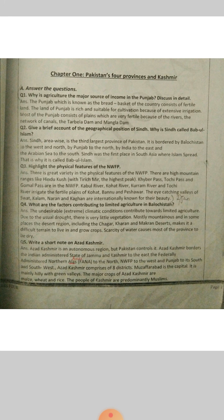The undesirable extreme climatic conditions contribute towards limited agriculture in Balochistan. The climate is very undesirable. Balochistan is divided into two types of areas: desert and mountains. In some places there are desert regions including the Chagai, Kharan, and Makran deserts. These deserts and mountainous areas make it a difficult terrain to live in and grow crops.